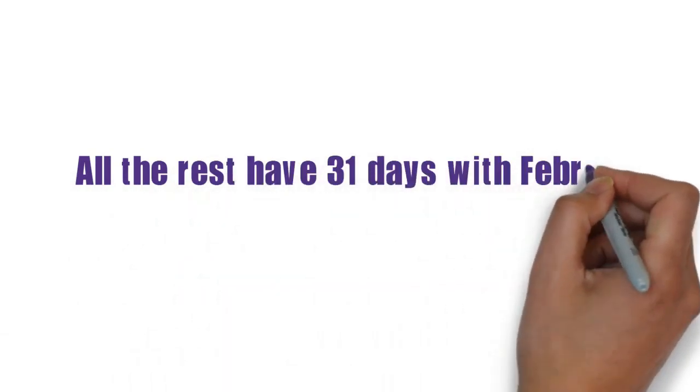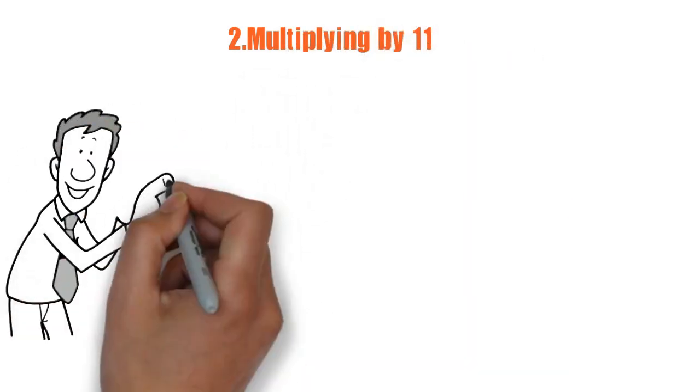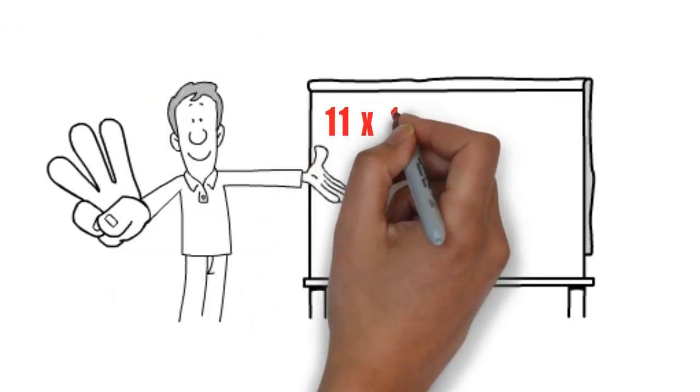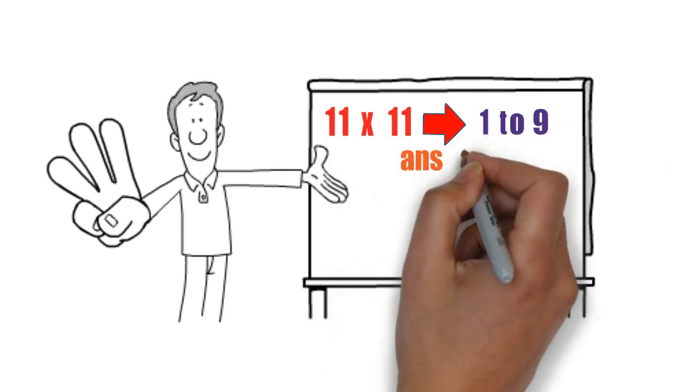2. Multiplying by 11. Multiplication tables can throw students for fits. An old-school trick for 11 is that multiplying 11 by any number from 1 to 9 gives you an answer that doubles the number that was multiplied.